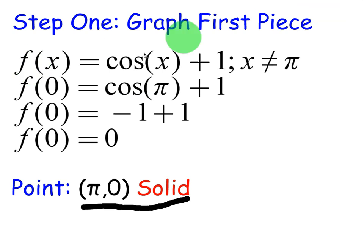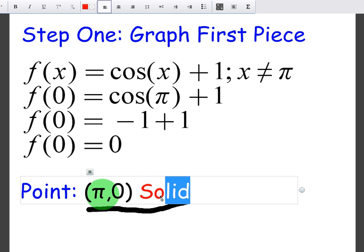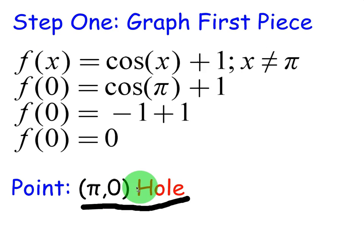So step one, let's graph the first piece, f of x equals cosine of x plus 1. We're going to plug in this value into our interval even though we know it's going to be a hole there because it's not equal to. So let's go ahead and plug in π in for x. Cosine of π is equal to negative 1. Negative 1 plus 1 is 0, so therefore I know there's going to be a point at π comma 0, and that says solid. That is wrong. That's going to be a hole. And again, that's going to be a hole because it's not equal to π. Glad I corrected that.